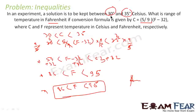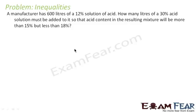So this is the range of temperature in Fahrenheit for the same solution. The range of temperature in Celsius was 30 to 35. Let's take another example. Here it says a manufacturer has 600 liters of 12% solution and wants to add x liters of 30% solution.